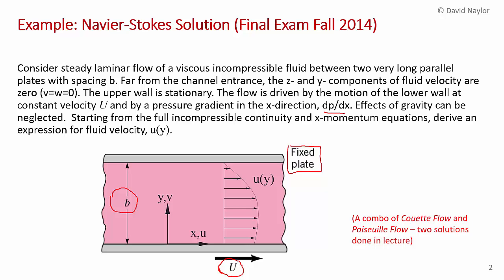The effects of gravity can be neglected. Starting from the full incompressible continuity and momentum equations, derive an expression for the fluid velocity u(y). This is a combination of Couette flow — driven solely by wall motion — and Poiseuille flow, driven by a pressure gradient. These are two solutions we covered in lecture, so it's a matter of combining them.